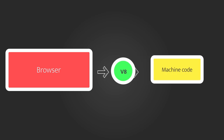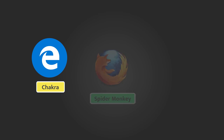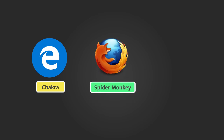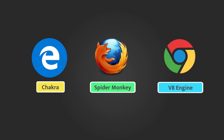There are different engines embedded in browsers to convert JavaScript code into machine language. For example, Microsoft Edge uses Chakra, Firefox uses SpiderMonkey, and Chrome uses the V8 engine. Both your browser and Node run on the V8 JavaScript runtime engine.